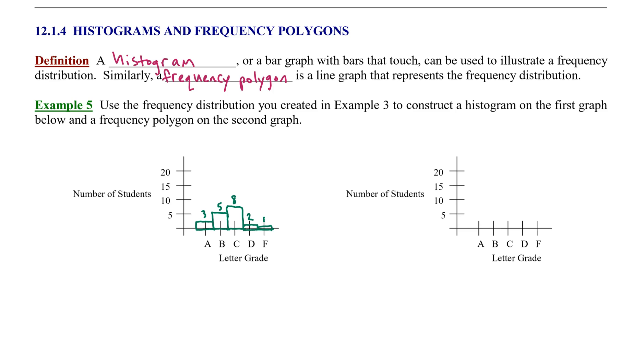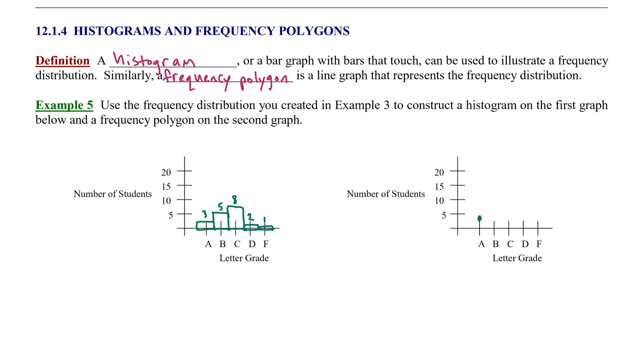Now we can do a frequency polygon for the same data. Remember we had three A's. I'm just going to put a point on the graph at approximately three over the data point A. We have five B's, eight C's, two D's, and one F.